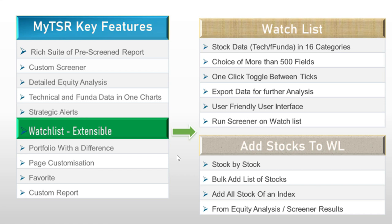Another topic we cover is how to add stocks to a watchlist — either stock by stock, bulk add, or you can add all stocks of an index. For example, if you want to add all stocks of Bank Nifty, there's a one-click option. You can also add stocks from screener results, both pre-screened and custom screener, as well as from equity analysis as we have seen in the previous slides.